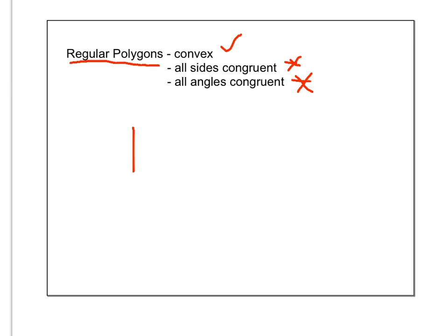So probably one of the most common would be a square. All four sides are congruent and all four angles are all right angles, which means they're congruent.